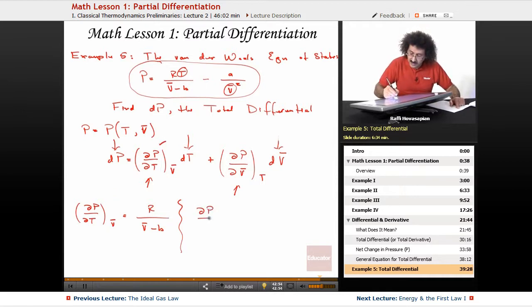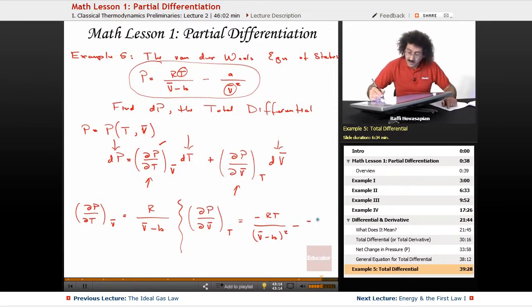Now let's go ahead and take the derivative with respect to V, holding T constant. The derivative of this, holding, this time, T constant. What you end up with is the following. You end up with minus RT over V minus B squared minus A times 2 times V over V to the fourth. And then when I go ahead and cancel, I'm left with my final expression, which is minus RT over V minus B squared.